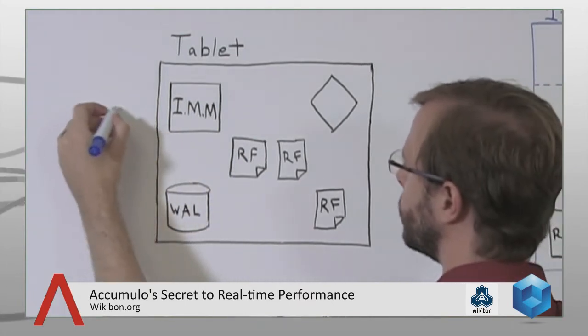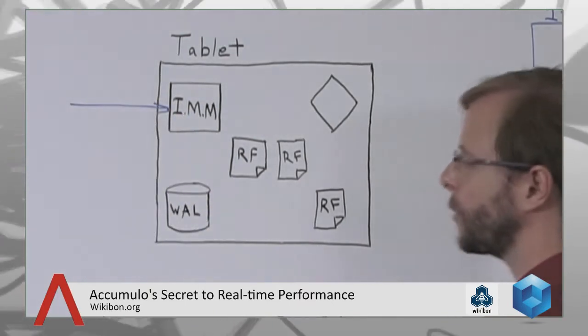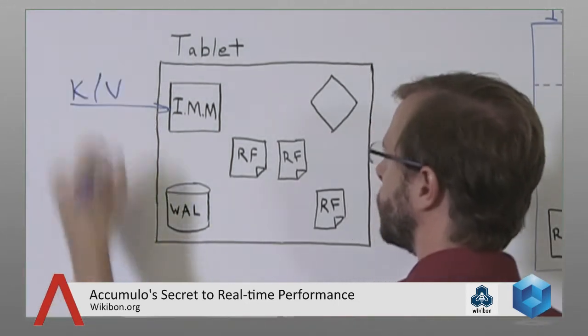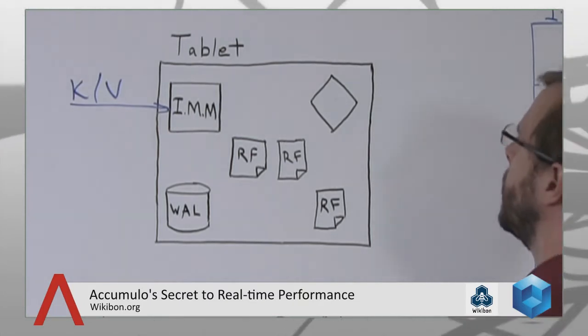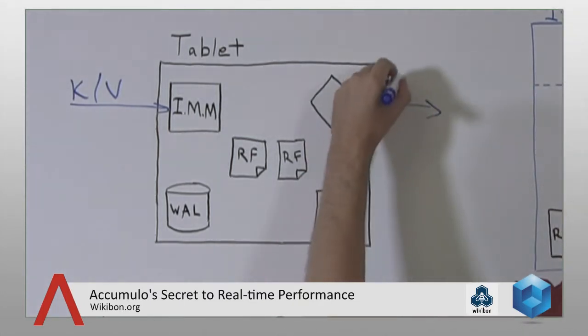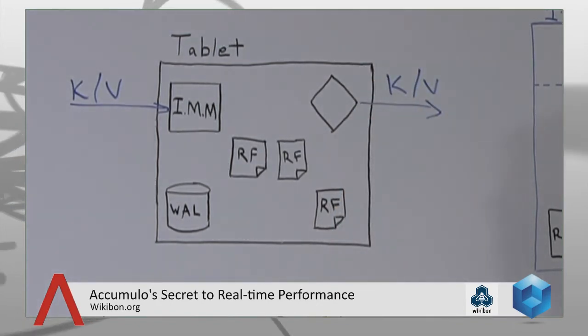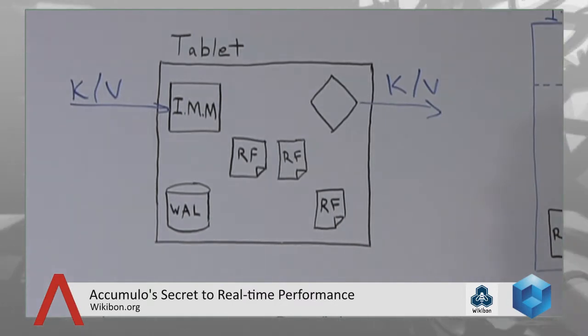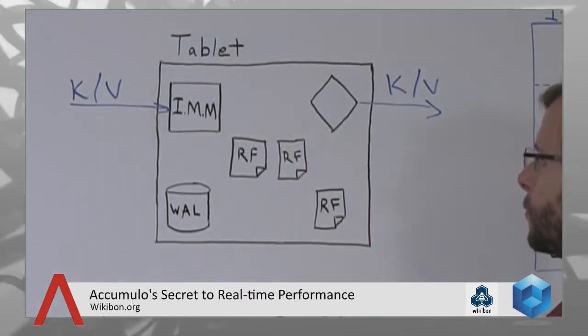Accumulo stores key-value pairs in sorted order. We take tables, which are really just collections of key-value pairs, and break them up into partitions known as tablets. Focusing in on just one particular tablet, we can talk about a couple of operations specific to that data. Looking at the tablet data flow, we have data coming in from the left — key-value pairs in random order within the boundaries of that tablet. On the right, key-value pairs come out in sorted order. So: in random order, out in sorted order, and in between there's a series of operations to perform that sort.